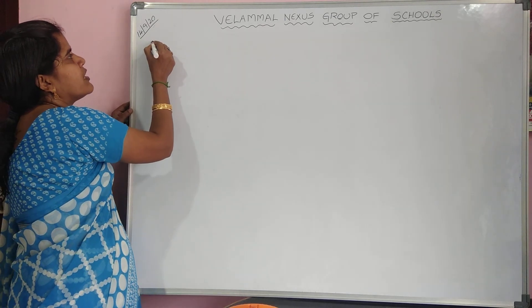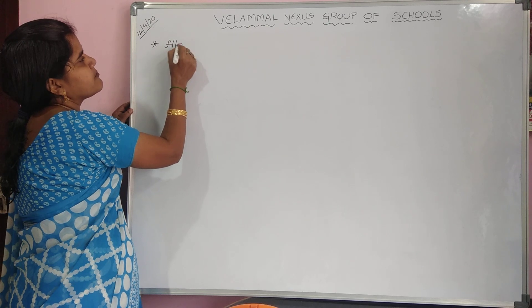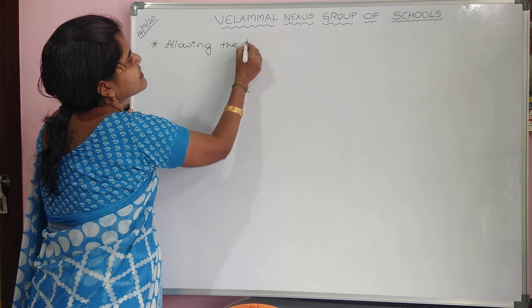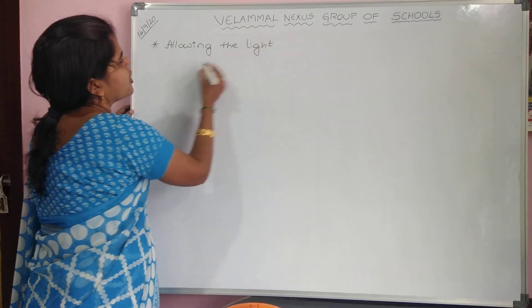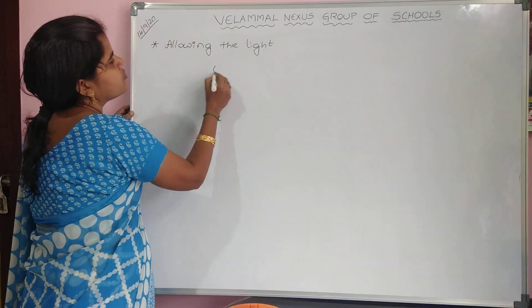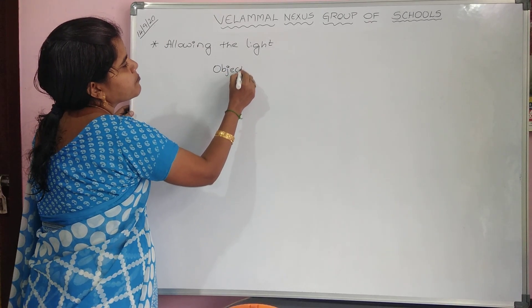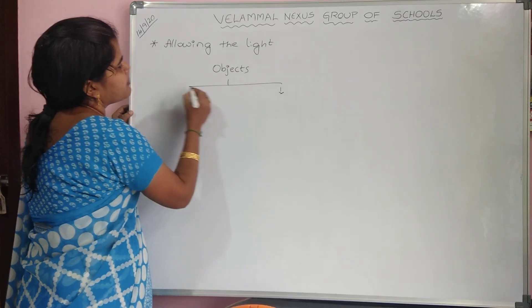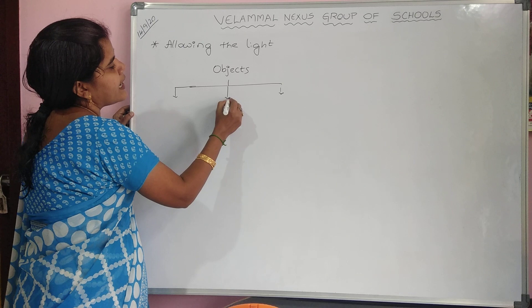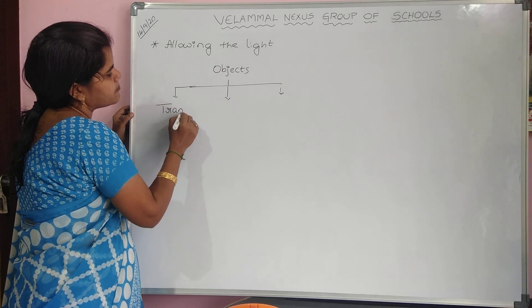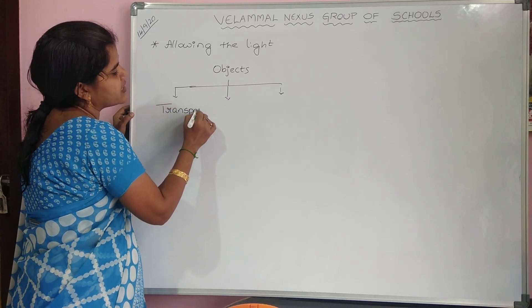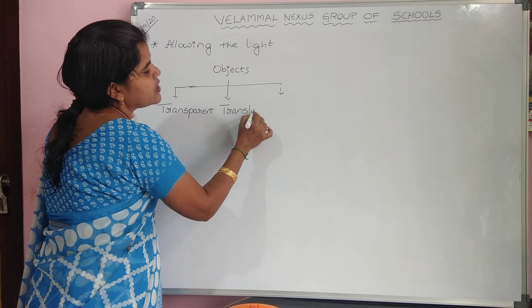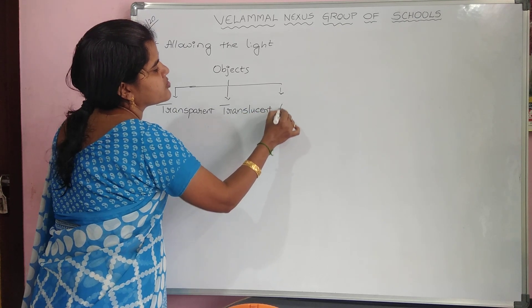Now, based upon the passage of light — how much light an object allows through — objects are again classified into three categories: transparent, translucent, and opaque.